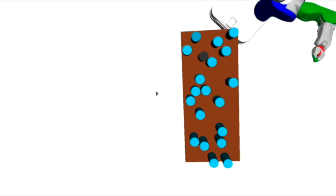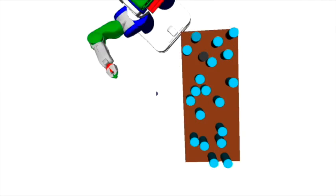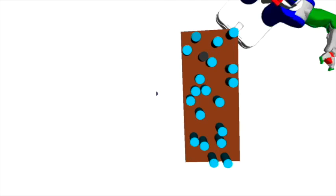Here the robot fails to find a grasp pose for the black can that goes through the obstacles, so it must start to rearrange them in order to reach the black can.